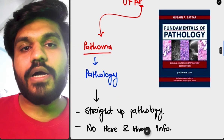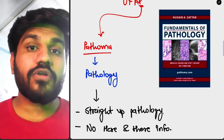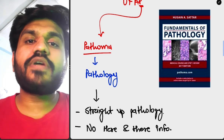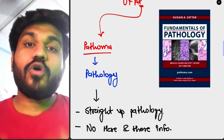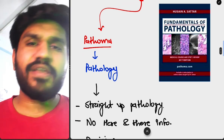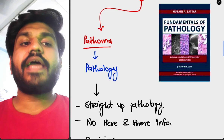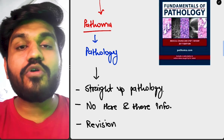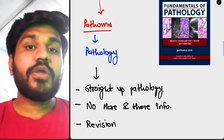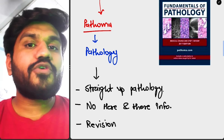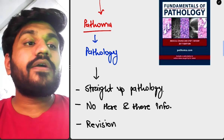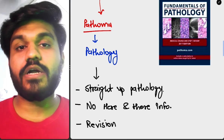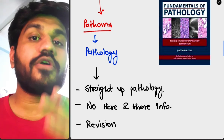P in UFAP stands for Pathoma — it's for pathology. Dr. Husain describes pathology so well in this book; every line is so sharp that your concepts become crystal clear. There's no filler — it's straight-up pathology. This book is great for revision after you've done First Aid and Boards and Beyond. It's only 200 pages, so your entire pathology is covered in a quick revision. I highly recommend Pathoma for your USMLE preparation.